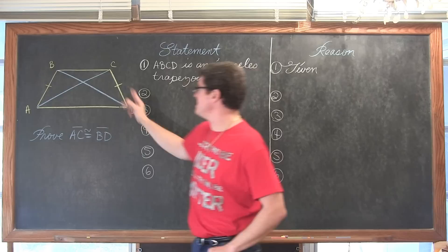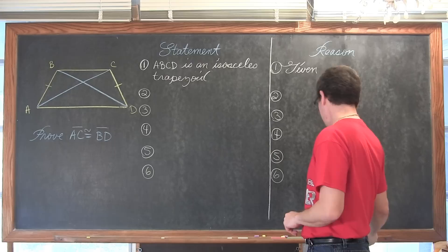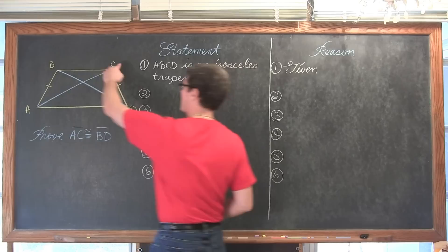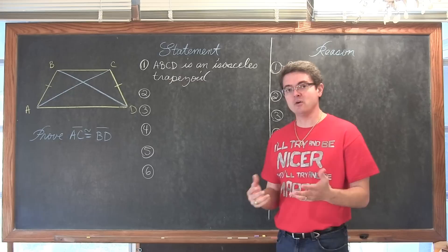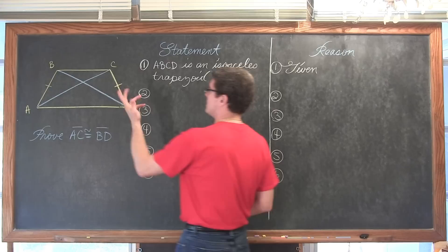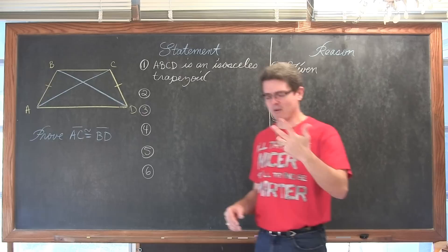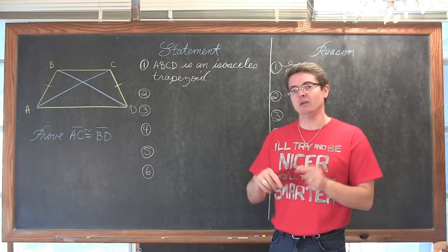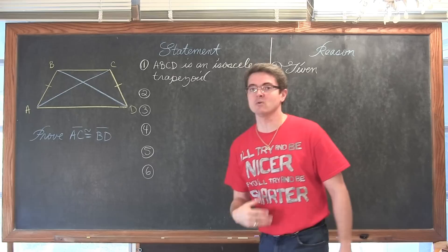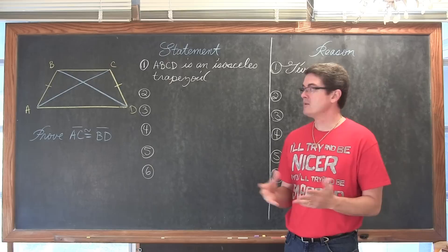We are going to prove that the diagonals of an isosceles trapezoid are congruent with a two-column proof. Given: trapezoid ABCD is isosceles. Prove: AC is congruent to BD. By drawing the diagonals, we can see two overlapping triangles — triangle ACD and triangle DBA. If we prove those two triangles are congruent, then by corresponding parts of congruent triangles, AC is congruent to BD.